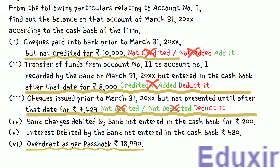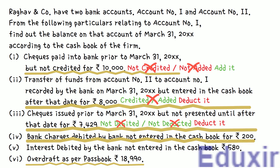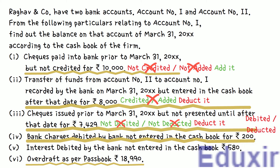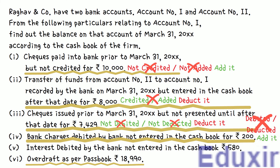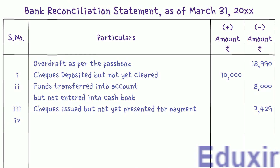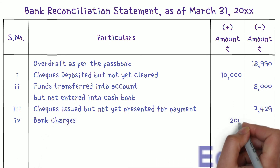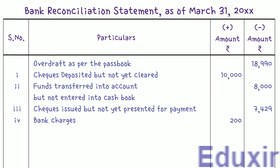Here, it is given that 200 rupees of bank charges are debited by the bank but not entered in the cashbook. When the bank debits the bank charges, the business is not aware of these deductions until the bank statement is received, so they will not be in the business cashbook. We need to add this amount to the passbook balance to get the cashbook balance. Let us write the particulars as 'bank charges' and enter 200 rupees in the plus amount column.